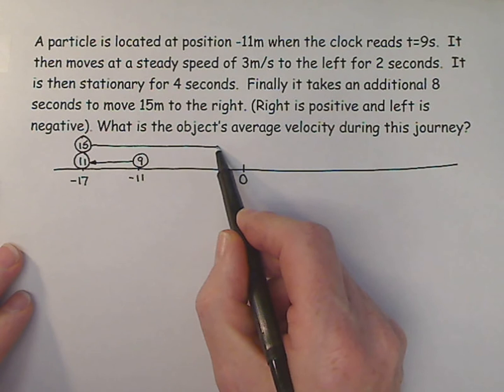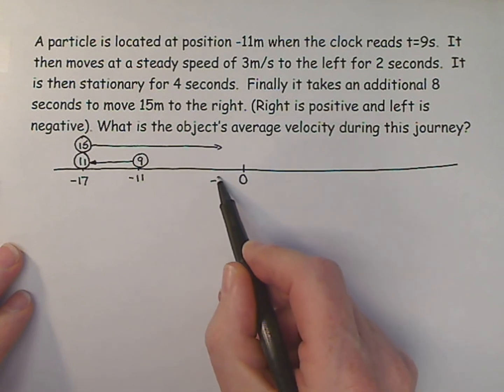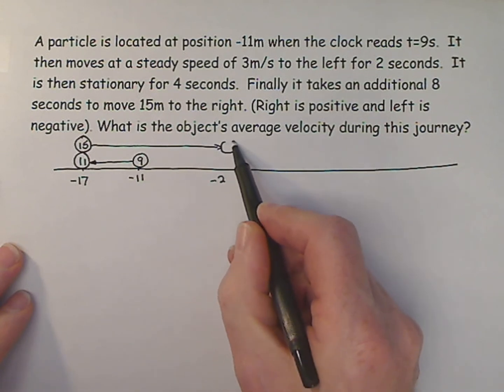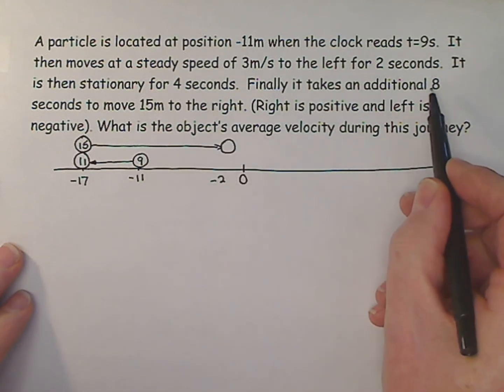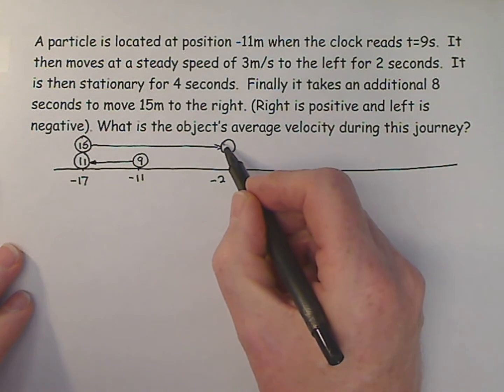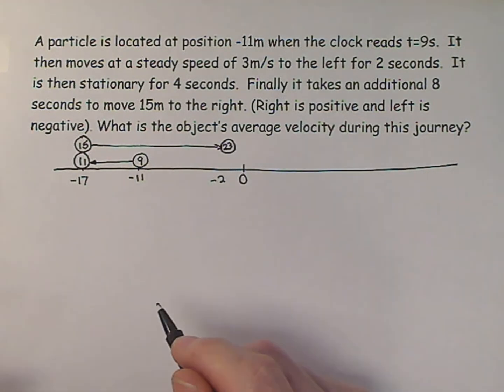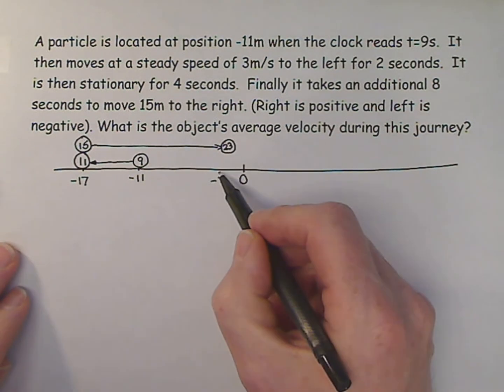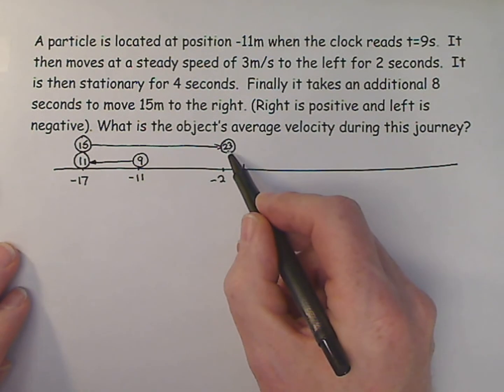Well, that's going to take us way down here to minus 2. And the clock is going to be 8 seconds added on to the 15, which is 23 seconds. So here we are at minus 2 meters. That's our address. And the clock is now saying 23 seconds.